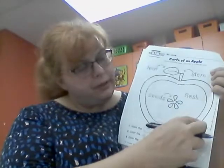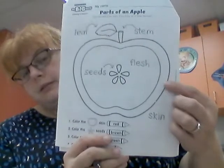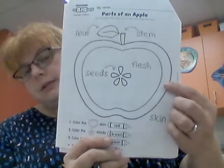So then we go to this outer part right here all the way around. It says skin. The skin is the part of the apple that you see. It's usually green, yellow, red, those colors, or kind of a mixture sometimes. That's the outside that protects it. So there's the skin.